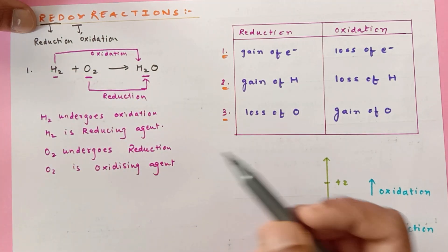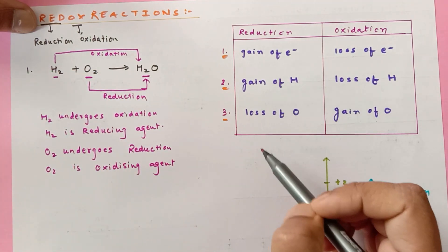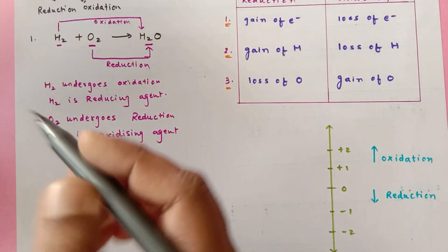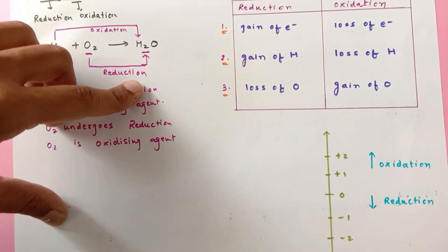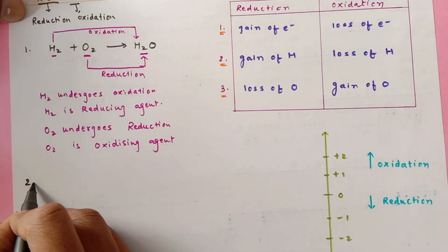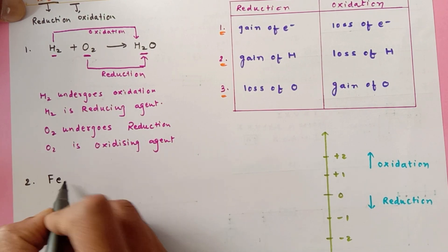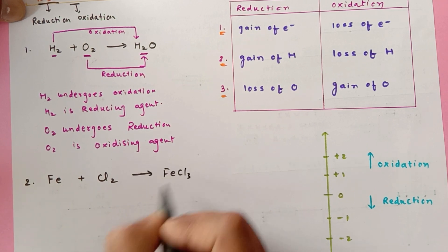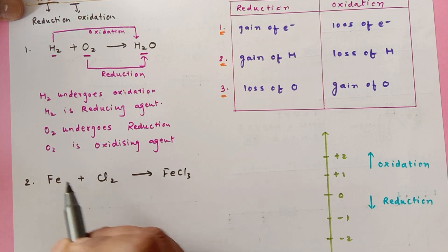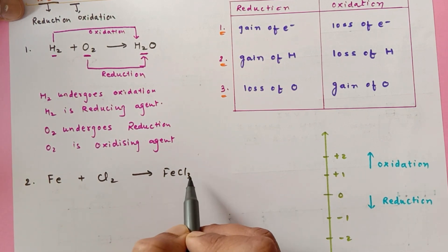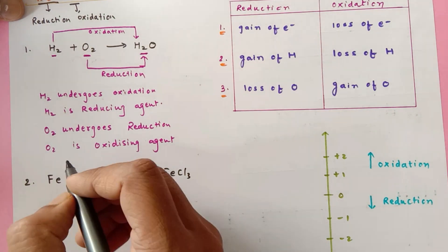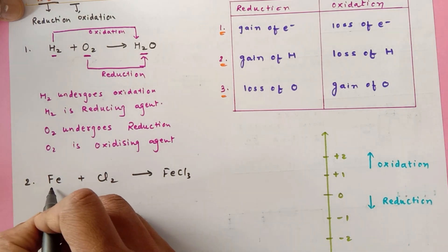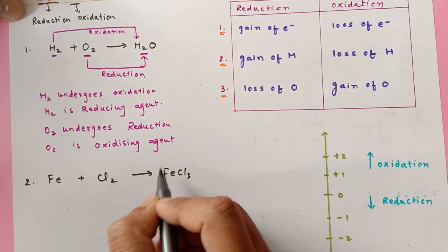That reaction was understood on the basis of loss and gain of hydrogen. Now let us take another example where we can apply the first concept — that is, gain and loss of electrons. The reaction is Fe + Cl₂ → FeCl₃. So this is iron, this is a chlorine molecule, and this is iron(III) chloride. The easiest trick is to find single elements — iron is a single element, Cl₂ is a single element, but FeCl₃ is not; it is a compound.